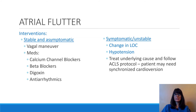Looking at interventions for atrial flutter, we need to distinguish whether the patient is stable and asymptomatic, or symptomatic and unstable. The criteria for symptomatic and unstable, per ACLS protocol guidelines, are a change in level of consciousness and hypotension, defined as a systolic blood pressure less than 90.